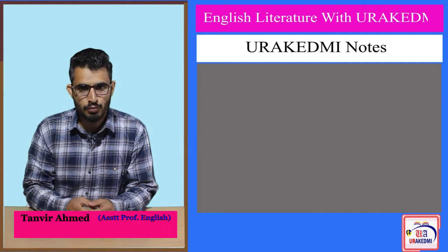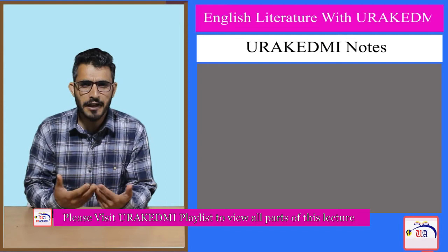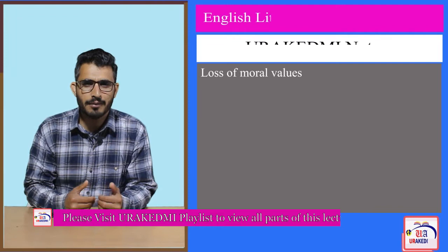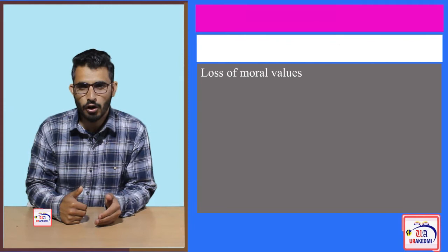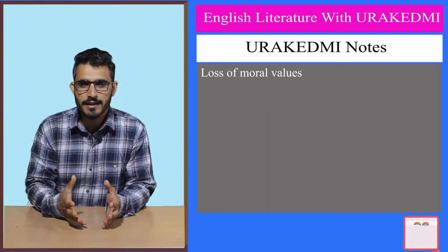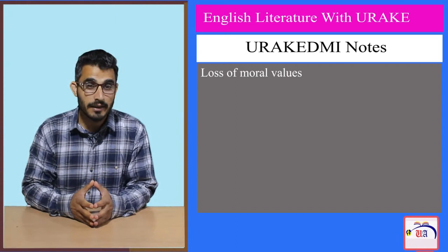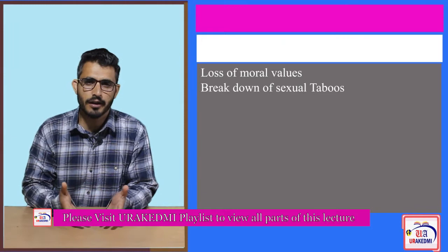Loss of moral values is another dominant theme in postmodern writing, and we find this theme in Who is Afraid of Virginia Woolf as well. The way George and Martha abuse each other shows moral corruption. Martha, who is George's wife, seduces Nick — and even in front of George, she would be kissing Nick and engaging in sexual acts. So we find that the society as a whole, as presented in Who is Afraid of Virginia Woolf, is morally corrupt.